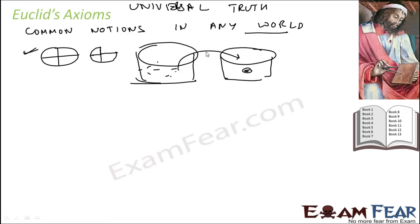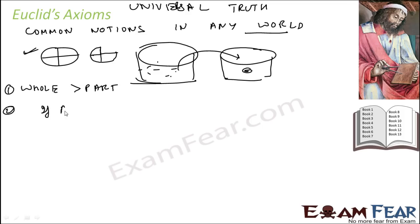There are certain other axioms also. For example, if I say a is equal to b, and b is equal to c, what does it imply? This implies a is equal to c. So things which are equal to the same thing are equal to each other.